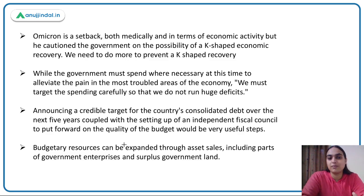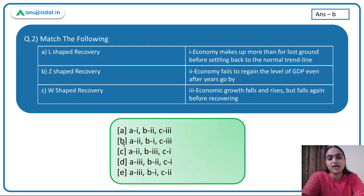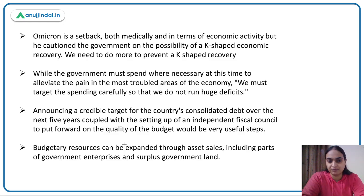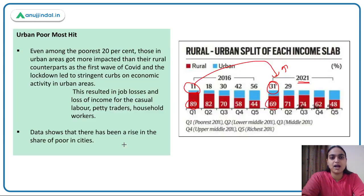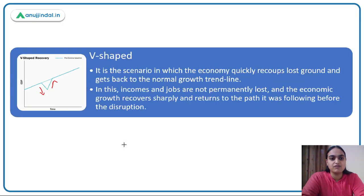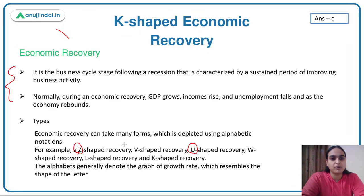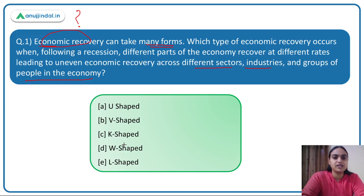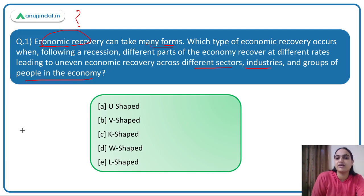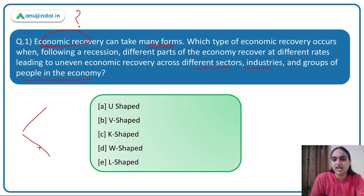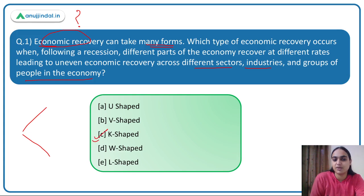So this was all about economic recovery. Coming back to the first question — which talked about a recovery where some sectors are recovering and others are not, an uneven recovery across different sectors, industries, and groups of people — that is a K-shaped recovery. The answer is option C.